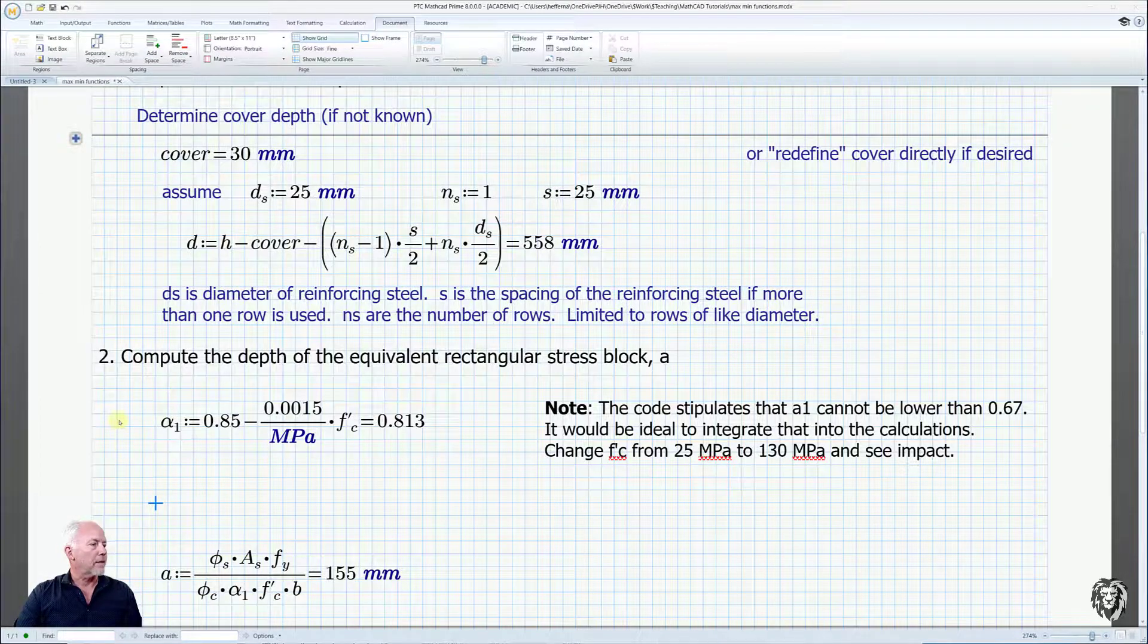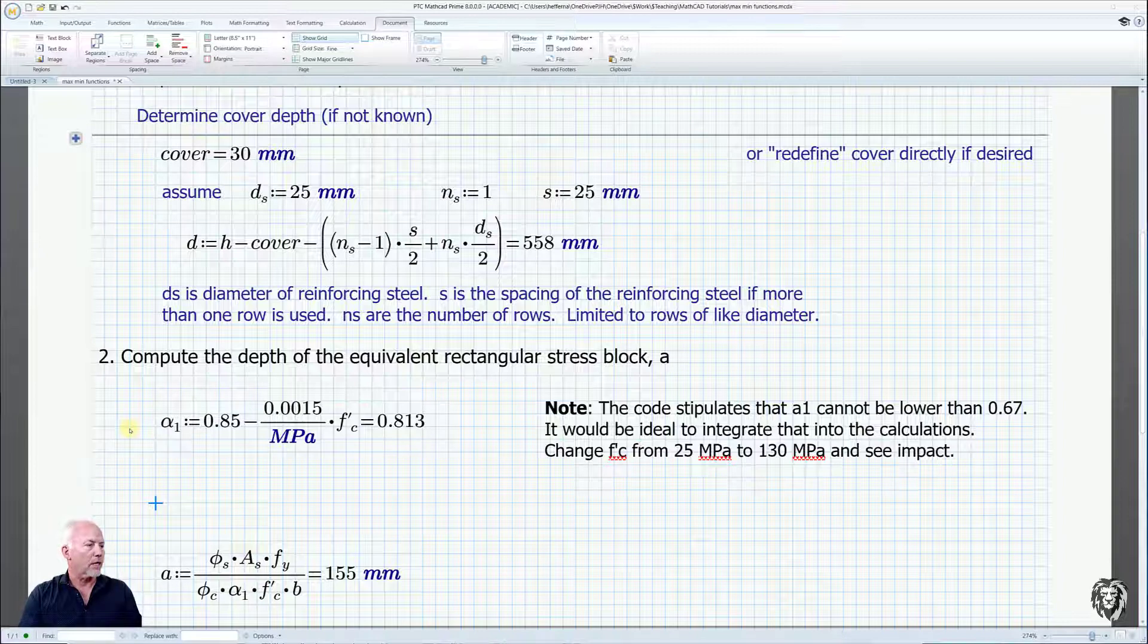One of the parameters that we calculate if we're using equivalent rectangular stress blocks is this alpha1 parameter and we see the equation for it out here.